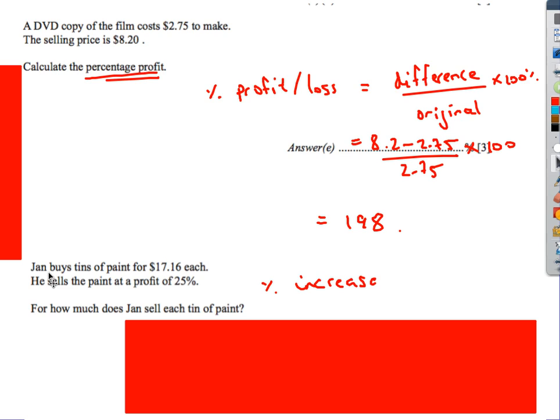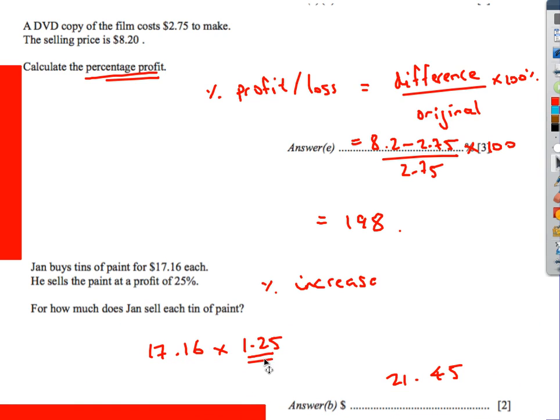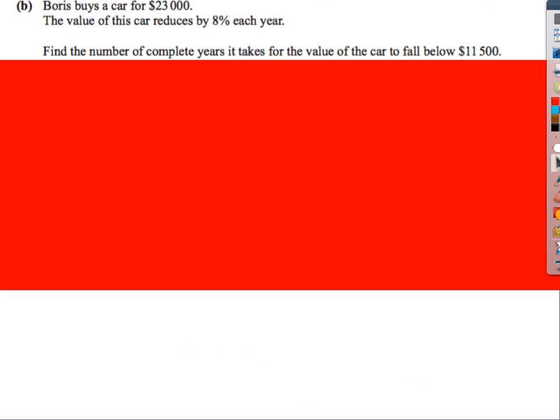Next one. We buy some paint for $17.16. We sell it at a profit of 25%. How much do we sell each paint can for? We're just increasing it by 25%. We're starting with 100%, increase it by 25%, so we've got 125%. So 17.16 times by 1.25 equals 21.45.